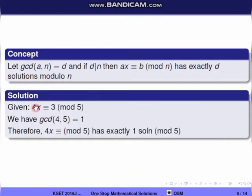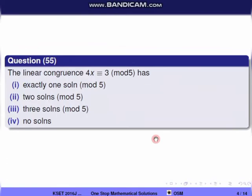For 4x ≡ 3 mod 5, we have a = 4, b = 3, n = 5. Computing gcd(4, 5) = 1. Since 1 divides 3, the congruence has exactly one solution mod 5. So the correct option is the first one.